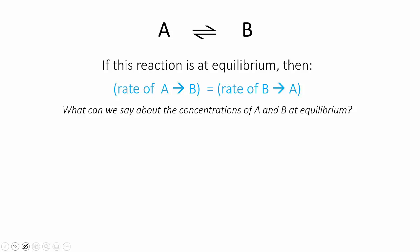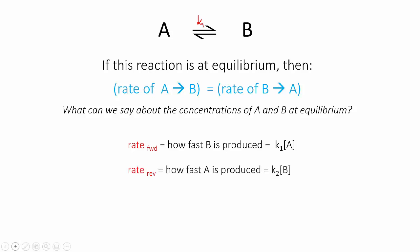The forward rate — the rate of the forward reaction, which is how fast B is being produced — equals a rate constant K1 times the concentration of the reactant A. And the reverse rate — the rate of the reverse reaction, which is how fast A is being produced — equals a different rate constant K2 multiplied by the concentration of B, because B is the reactant here. So that's K2·[B].